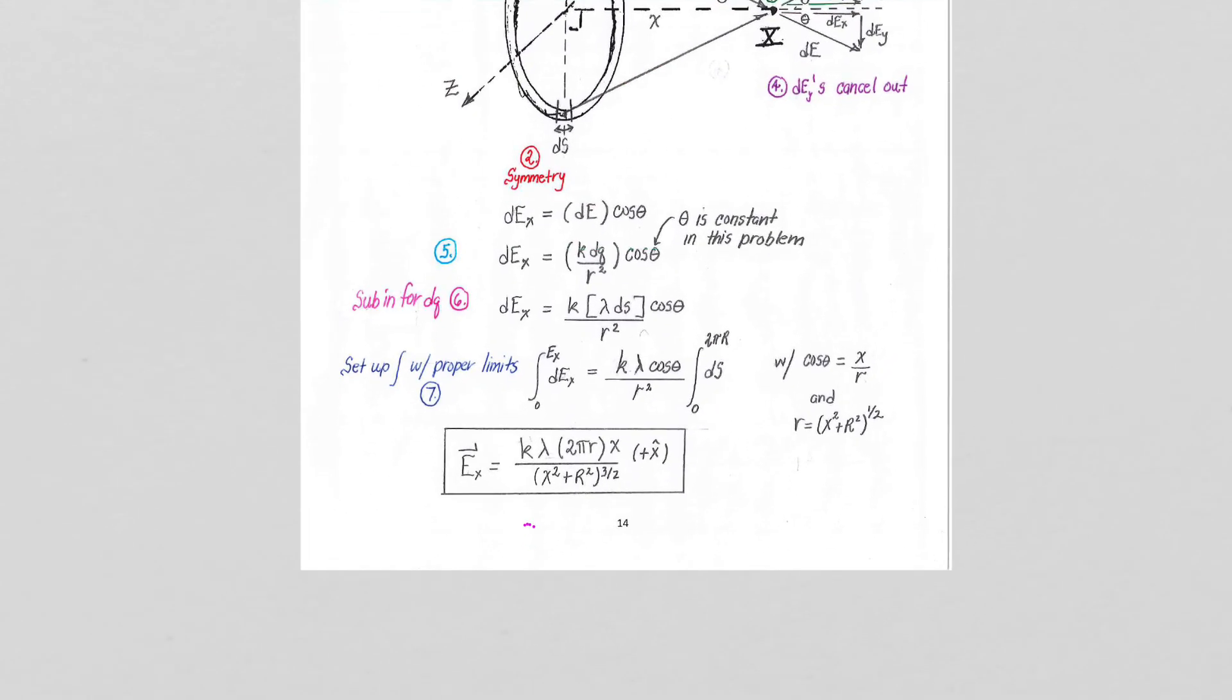Well, what we get, as we said before, the left-hand side is always easy. That's always going to be the integral of dE, so that will be our E as a function of x. Basically, everything came out of the integral. The k is constant, lambda is constant, theta remains constant, and r squared remains constant in this problem. So the integral of ds is s, and we integrate from 0 to 2 pi r. We get our 2 pi r here, so our integral ds gives us that red 2 pi r.